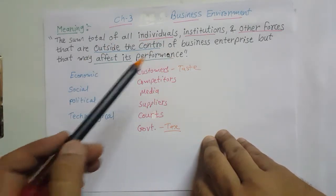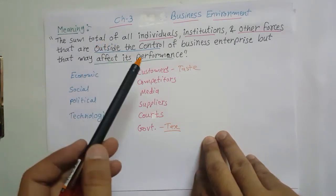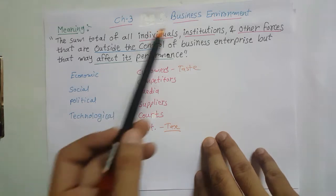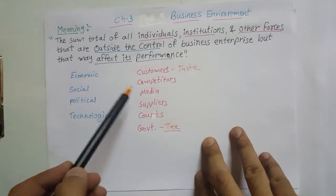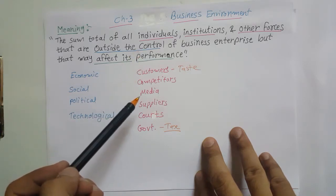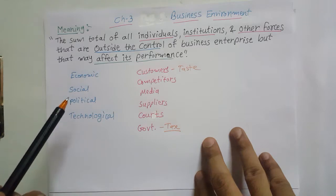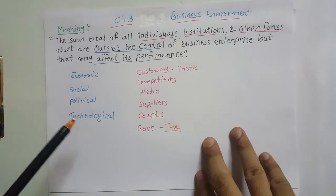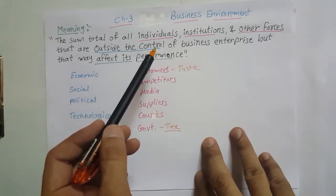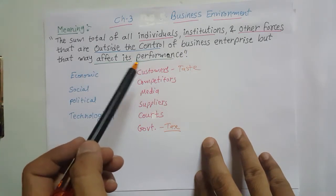Business environment includes those forces that are not in control of our business and are affecting it. Like individuals — customers, competitors, suppliers — they have a direct impact. Institutions like government and courts, and forces like economic, social, legal, political, and technological environment — all these things not in our control but affecting business performance constitute the business environment.